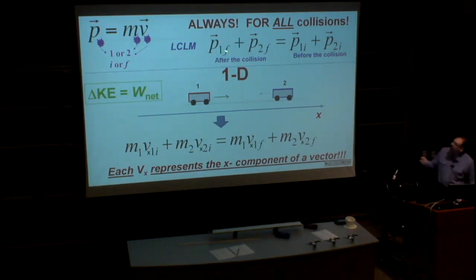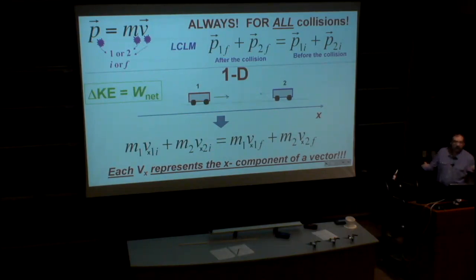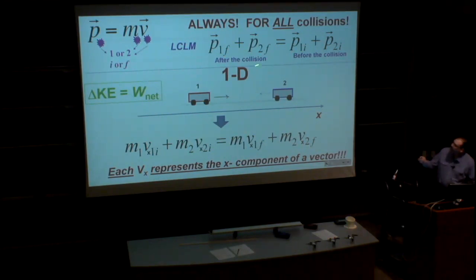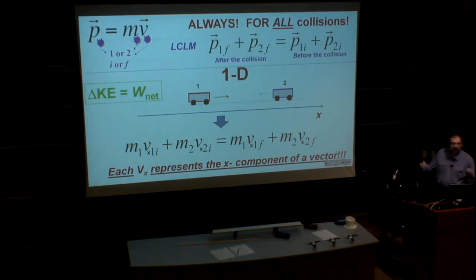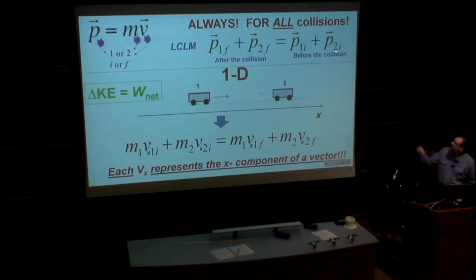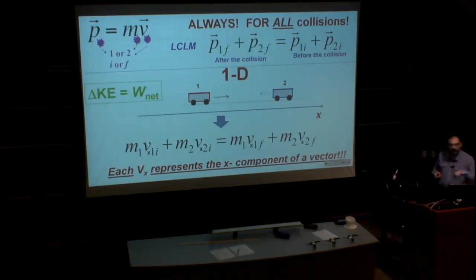When we write the expression for linear momentum, we need to know what each subscript means. For example, one and two mean object number one and object number two. Initial and final mean before and after the collision. So P1f represents the linear momentum of the first object after the collision, while P2i represents the linear momentum of the second object before the collision.